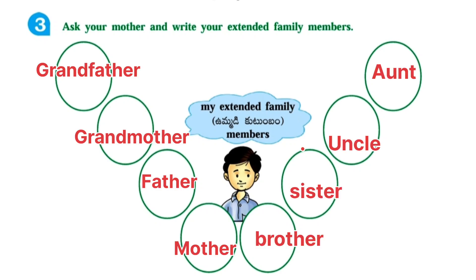Third one — Ask your mother and write your extended family members, father's and grandmother's family members: Grandfather, Grandmother, Father, Mother, Brother, Sister, Uncle, Aunt.